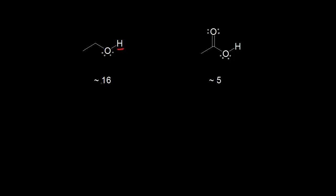This proton on ethanol has a pKa value of approximately 16, while this proton on acetic acid has a pKa value of approximately 5. Remember, the lower the value for your pKa, the more acidic the proton. So with a lower pKa value, acetic acid is more acidic than ethanol.